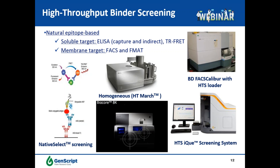After obtaining a large number of hybridomas, the next step is hybridoma screening for binders. We have multiple high-throughput screening platforms for suitable targets. Both capture and indirect ELISA are in place. For membrane targets, we have a BD FACS Caliber with high-throughput loader and high-throughput IQ screening system, which can read a 96-well plate in 3 to 5 minutes by FACS.